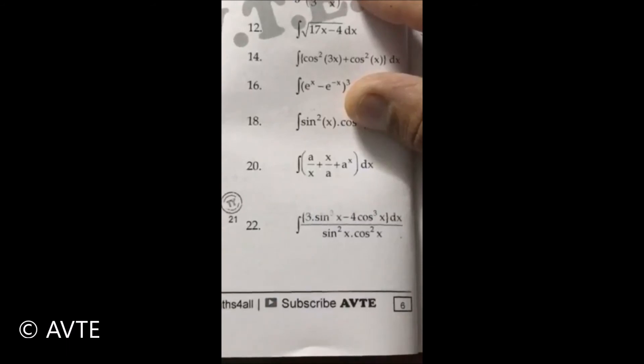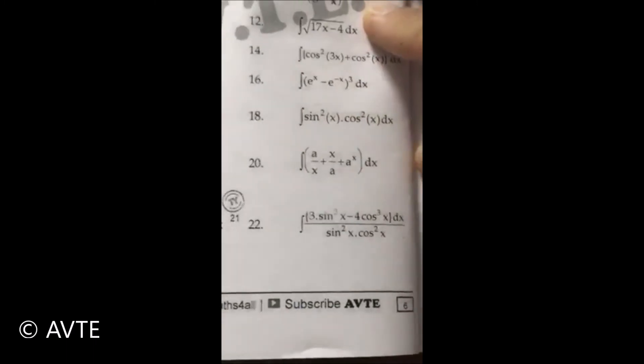One part will turn to 3 tan x sec x and the other part will be the integration for minus 4 cot x cosec x. Hope you got the idea. All the very best, thank you very much.